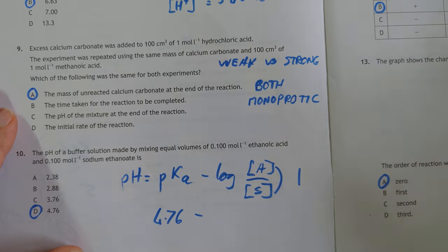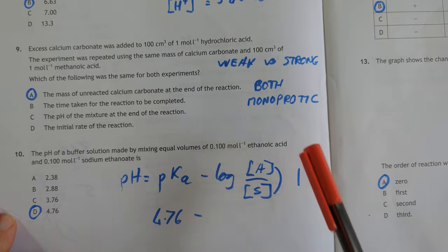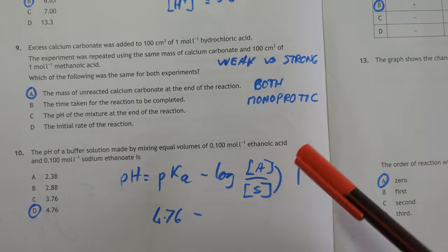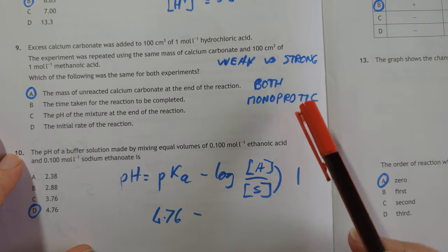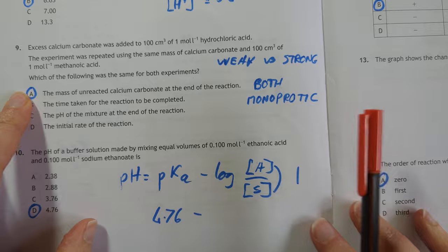It's a nice question, this one. I like this question. The weak versus strong properties, but they're both monoprotic. I might change the lighting. Just two seconds. A bit less shadowy. They're both monoprotic, so therefore, one of the things the same as the mass.